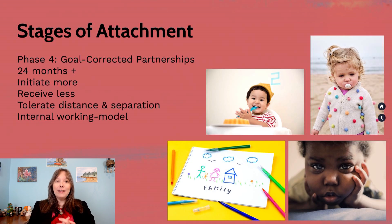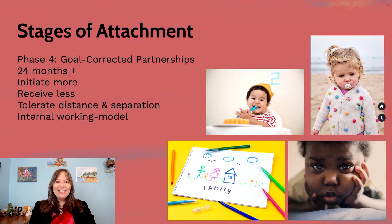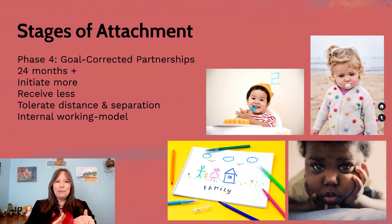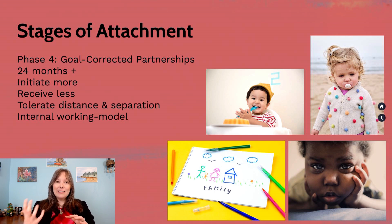Finally, we get beyond that really enduring stage three and move to what John Bowlby called stage four: goal-corrected partnerships. This happens somewhere around 24 months or just beyond, and thankfully it continues on. This is the idea that infants start to get it — they understand that the relationship they have with their caregiver is sustainable and it's not going to end just because the caregiver disappears temporarily. They understand they have a close relationship with their parent even when the parent is not physically present, and they can still feel secure.